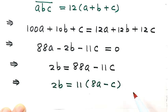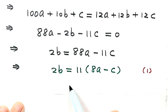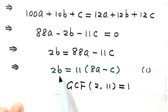Because we have 2 and 11 here, the greatest common factor of 2 and 11 is 1. So 2 is not divisible by 11. Therefore, B must be divisible by 11.